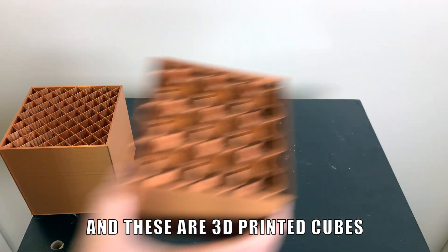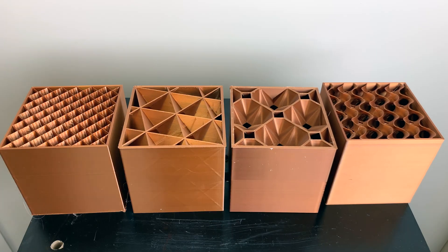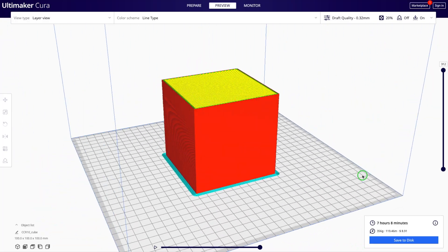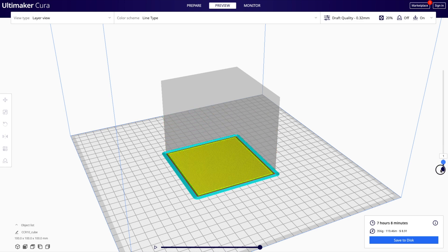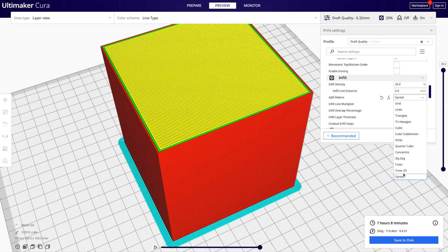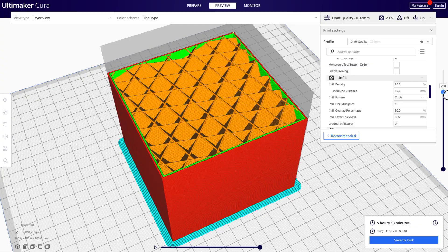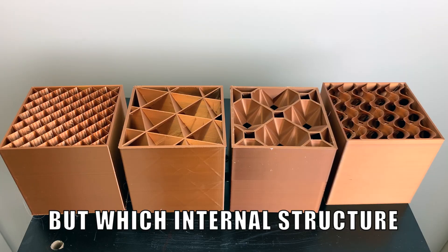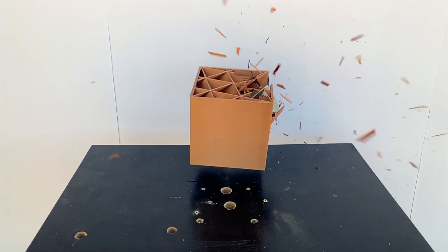And these are 3D printed cubes. 3D printers don't print solid objects. Computer programs generate internal structures to give the object strength. With the click of a button you could change the type of internal structure. But which internal structure is the strongest? In this video we'll find out.